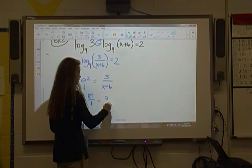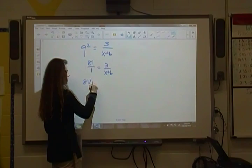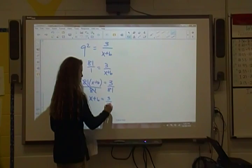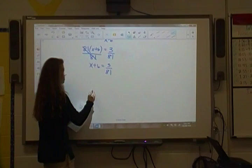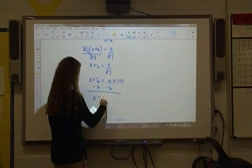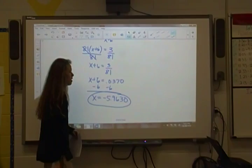So when I cross multiply, I get 81 times x plus 6. You can multiply that through if you want, but I'm not going to. I'm just going to go right ahead and divide by 81 now. So I have x plus 6 is equal to 3 over 81. And then I will subtract the 6. So x plus 6 is equal to 0.0370. Subtract 6. I get negative 5.9630.